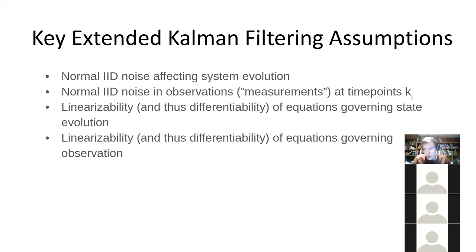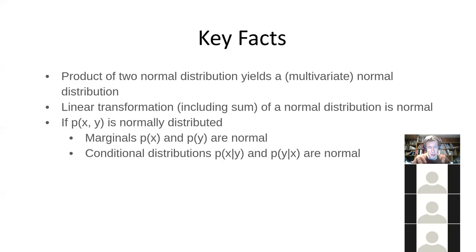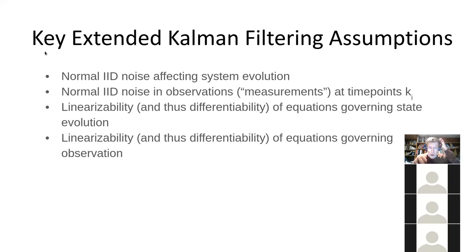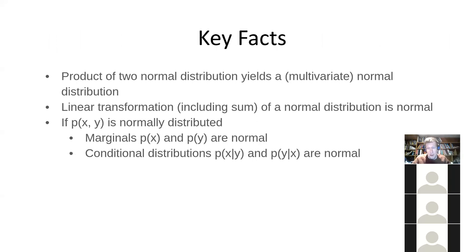The same applies to the equations relating observations to system state — the relationship that gives us what observation we'd expect given a certain system state must also be linearizable. This is important because particle filtering and particle MCMC don't make these assumptions and could in principle be used for non-linearizable models like agent-based models. Extended Kalman filtering does assume linearizability. You may wonder why we're strangely privileging normally distributed things.